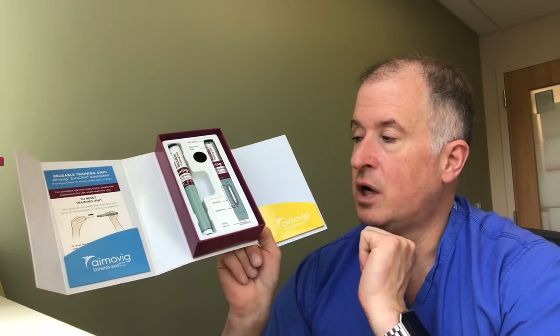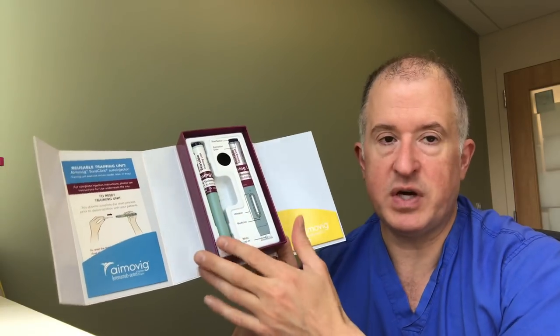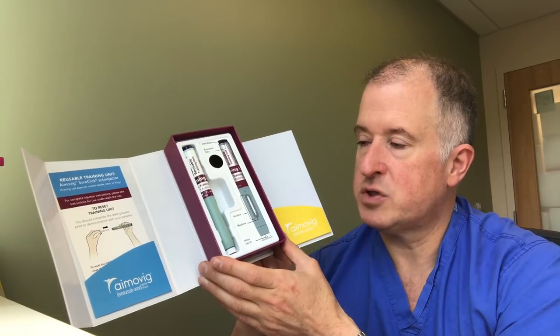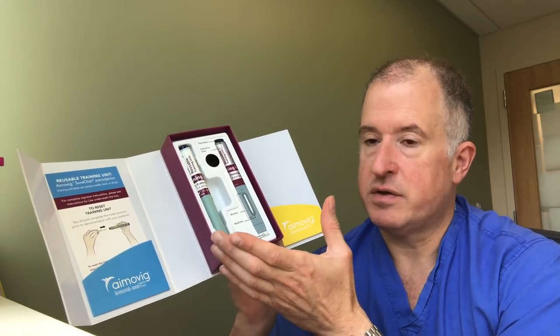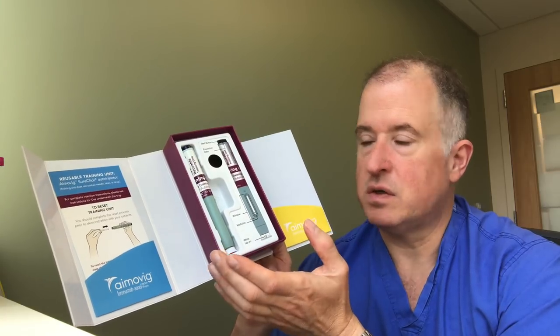There's going to be either one or two auto-injectors. So this is an example of an auto-injector right here, and each auto-injector delivers 70 milligrams of drug. So one treatment is either 70 or 140 milligrams, so it's either one injection or two injections.